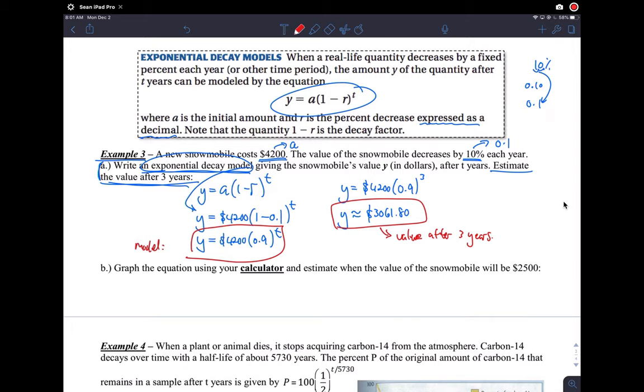And then graph the equation using your calculator and estimate when the value of the snowmobile will be 2,500. So you plug this in to your calculator, this function right here, plug the model into your calculator, y equals 4,200 times 0.9 to the T. In your calculator, remember, T would actually be switched out for X, so you type that in.